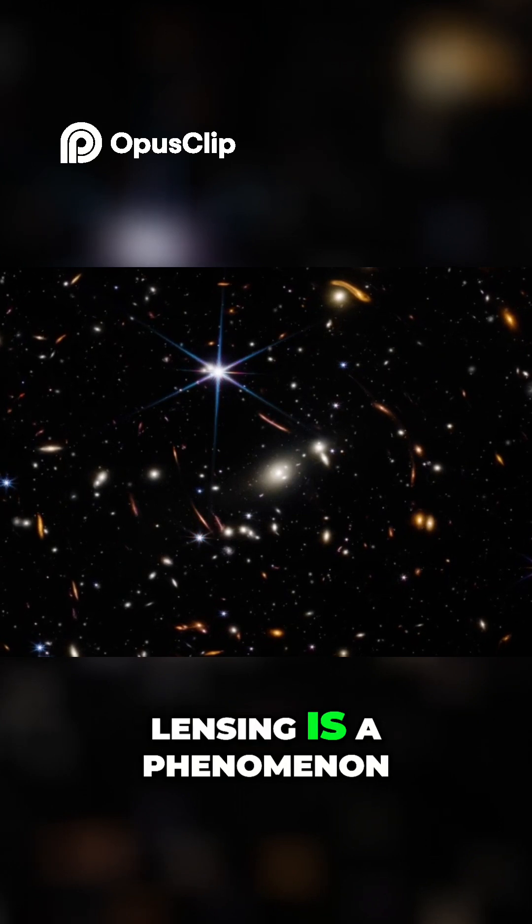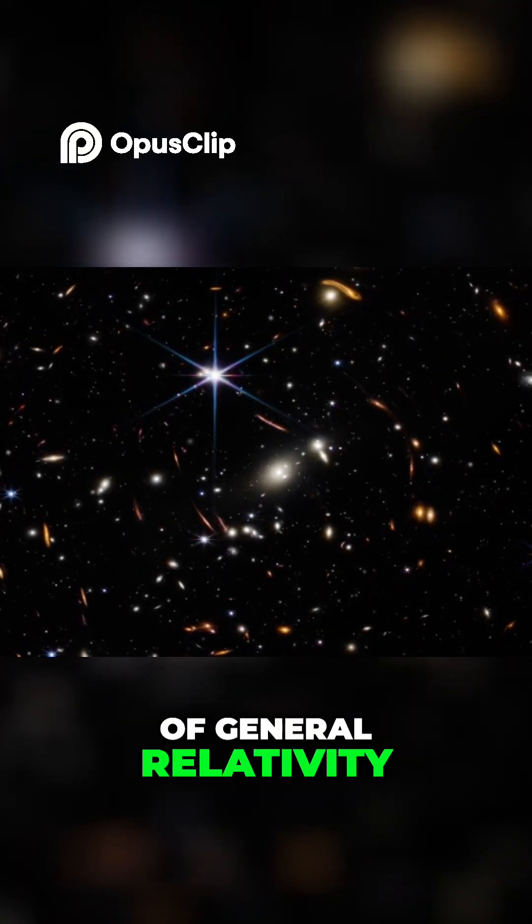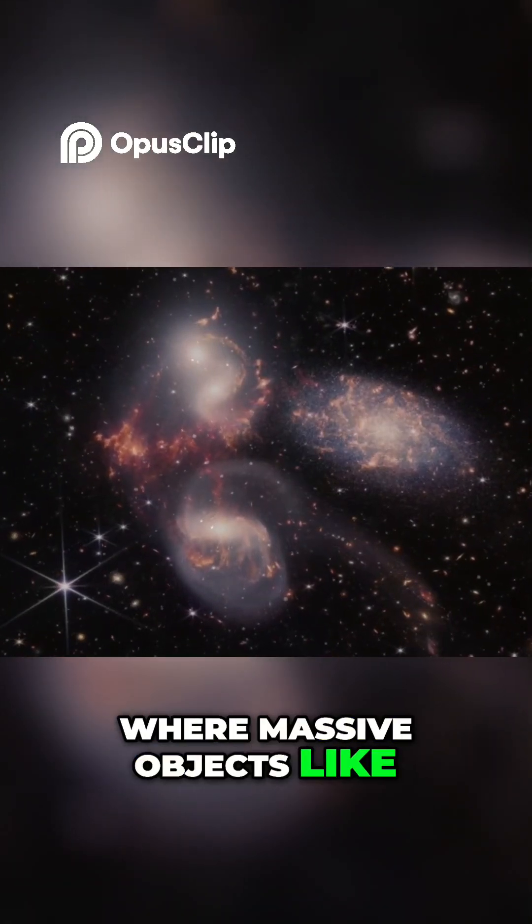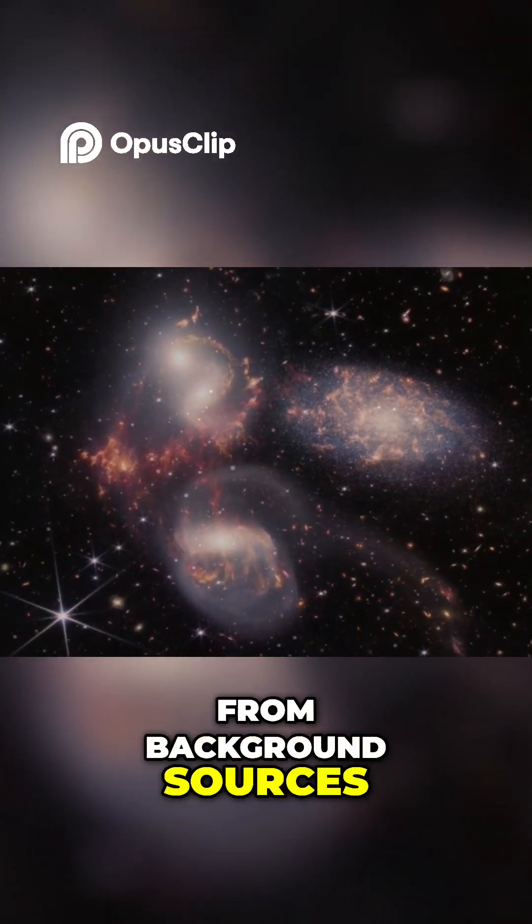Gravitational lensing is a phenomenon predicted by Einstein's theory of general relativity, where massive objects like galaxy clusters bend light from background sources.